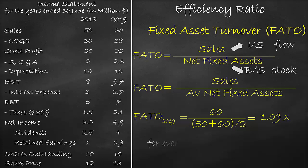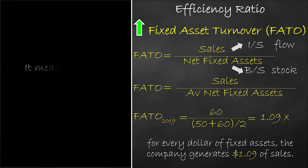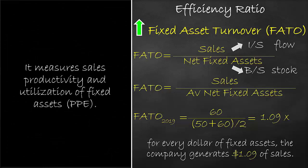The unit of the fixed asset turnover ratio is times. It means that for every dollar of fixed assets, the company generates $1.09 of sales. The higher the fixed asset turnover ratio, the better. It measures sales productivity and utilization of fixed assets, or property, plant, and equipment.